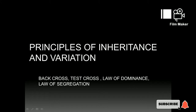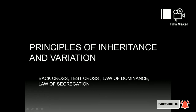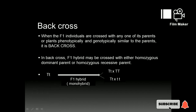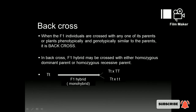Hi viewers, now we are going to discuss a simple and easy topic from the chapter Principles of Inheritance and Variation, that is in the unit Genetics. The first topic is back cross. When the F1 individuals are crossed with any of its parents, or plants phenotypically and genotypically similar to the parents, it is called a back cross.